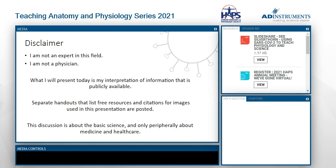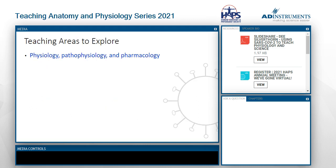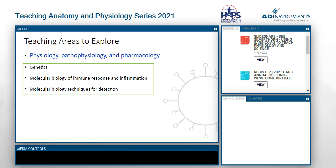If you look in the resource window, I've posted two handouts with a lot of free resources I've used in compiling this talk and my teaching, as well as a handout showing where to get some of the images I'm using today. We're going to focus primarily on physiology, but a little bit of pathophysiology and pharmacology. Depending on your comfort level, there are many other areas to explore: genetics with new variants, the immune system, molecular biology, immune response and inflammation, and detection techniques.